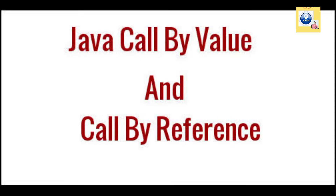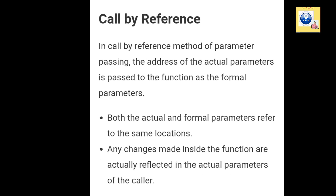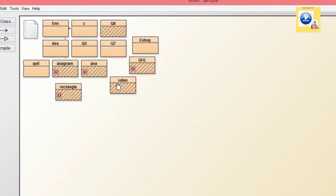When we use call by value, there are two copies of parameters stored in different memory locations — one is the original copy and the other is the function copy. If you make any changes in the function copy, that is not going to affect the original value. In call by reference, the reference of the value is shared, so the memory location is the same. If you make any changes to the formal parameter, it is going to affect the actual parameter as well.